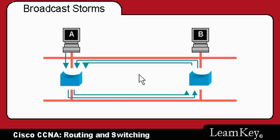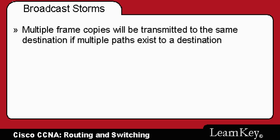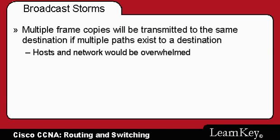Broadcast storms can be prevented with something called loop avoidance. Another problem that can occur without a loop avoidance mechanism is that multiple frame copies will be transmitted to the same destination if there are multiple paths to that destination. This can happen when you have more than one bridge attached to the same physical segment — you might have three, four, five, or more frames replicated from those bridges all aimed at the same host.